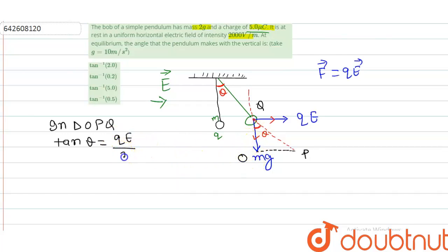Tan theta is going to be perpendicular upon base, and what is perpendicular? This OP, that is your qE divided by OQ, that is equal to mg. Now putting all the values: q is what we have given, 5 microCoulomb, 5×10^-6, E is 2000...